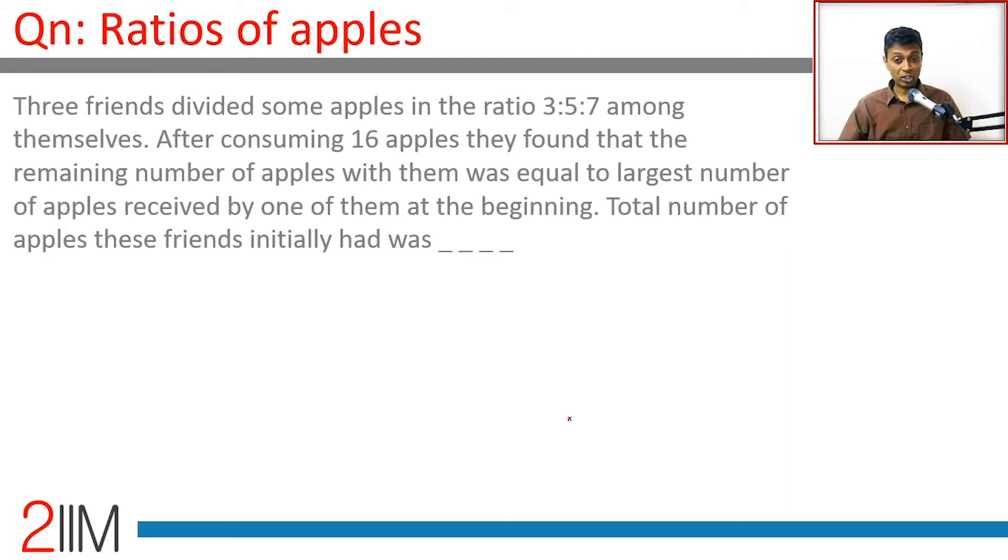Three friends divided some apples in the ratio 3:5:7, so they have 3x, 5x, 7x. After consuming 16 apples, they found that the remaining number of apples with them was equal to the largest number of apples received by one of them at the beginning.